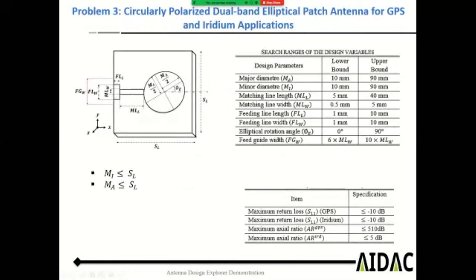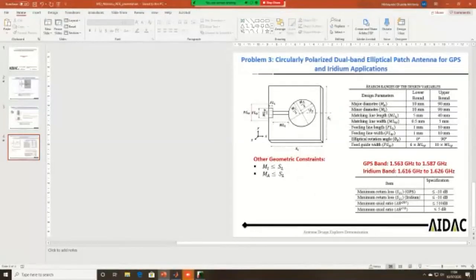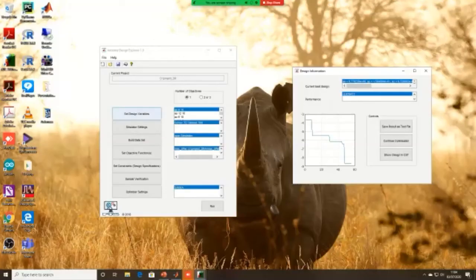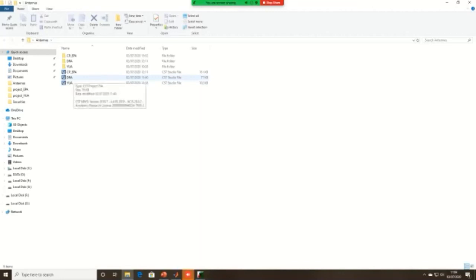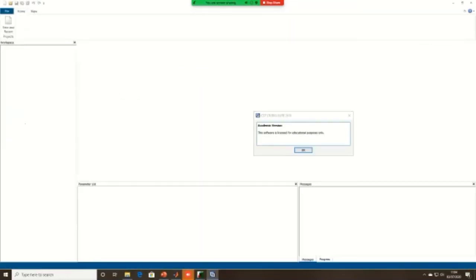The third problem is a circularly polarized dual-band elliptical patch antenna for GPS and Iridium applications. It has several specifications — note that the value should be 5 dB, not 510. There are also geometric constraints which I'll show you how to include in ADE. Before going to ADE, let me show these models in CST to give you a feel of what they look like — the DRA and the elliptical patch antenna.